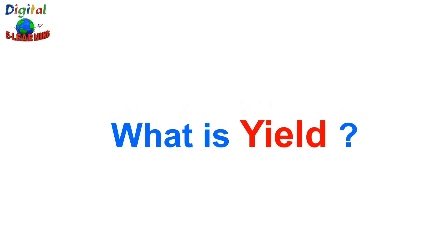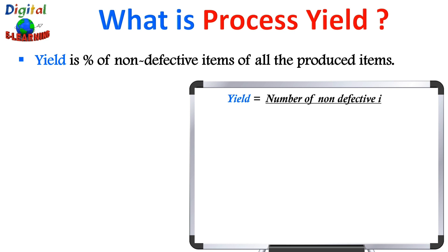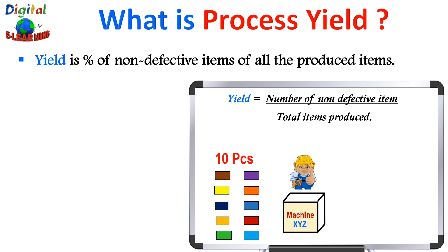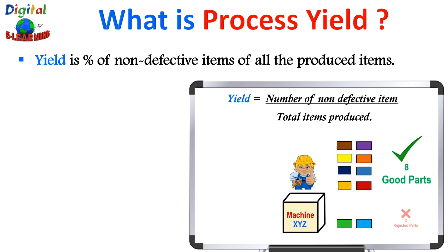Let's first understand the term yield. Yield is the percentage of non-defective items of all the items that are produced. It is used in manufacturing to measure the performance of a process, and is defined as the ratio of the number of non-defective items produced divided by the total items produced. For example, if we have a machine processing ten parts and we get eight good parts and two bad parts, the yield will be eight divided by ten.